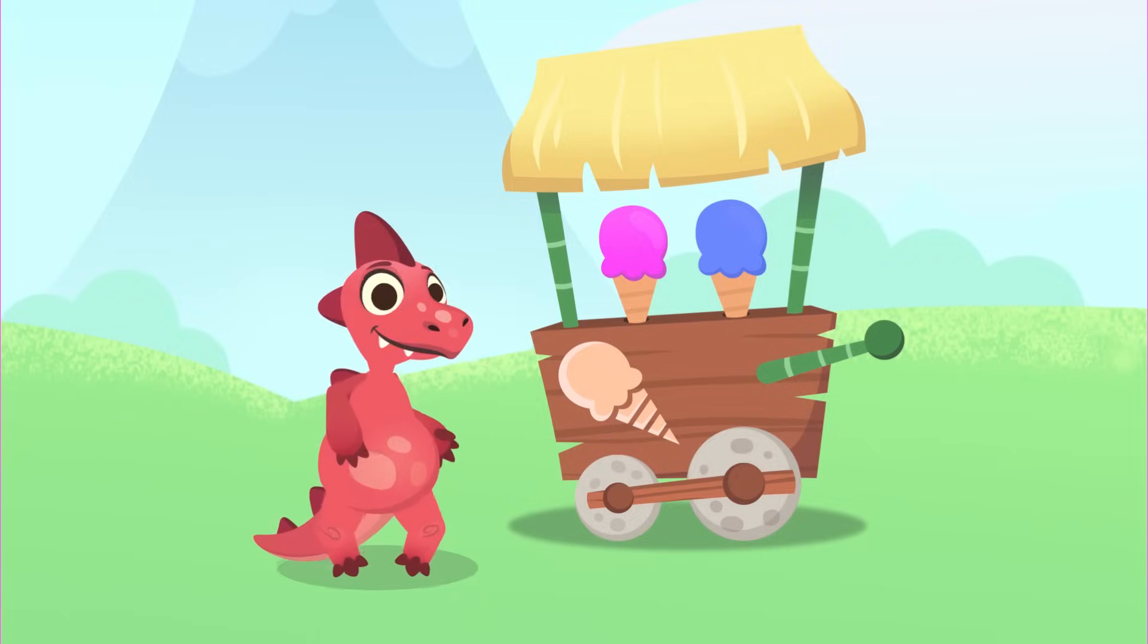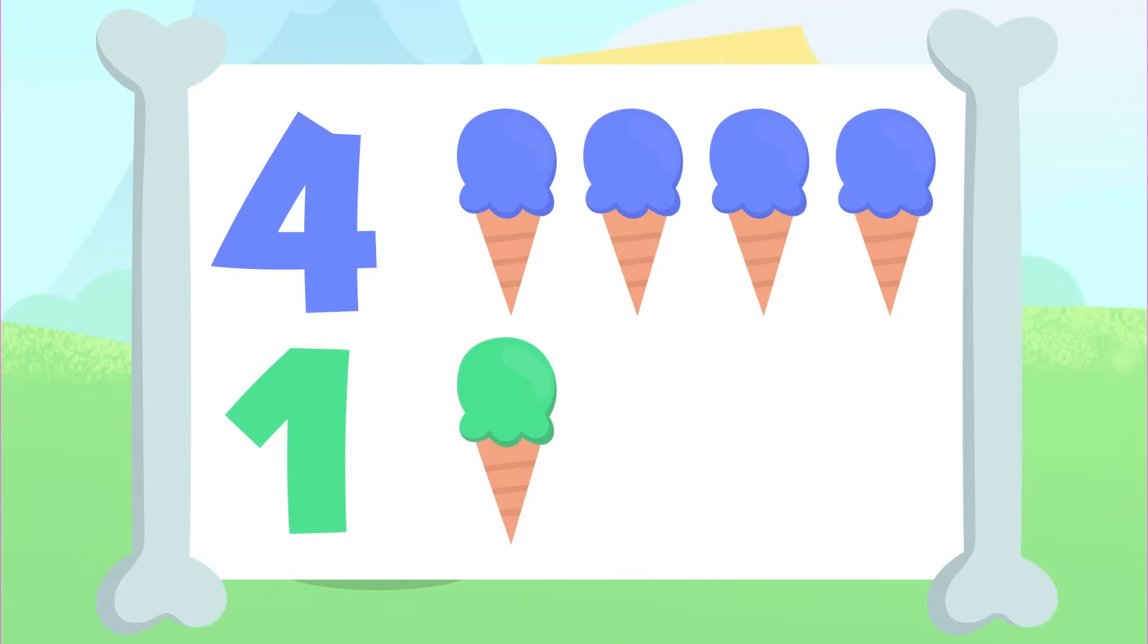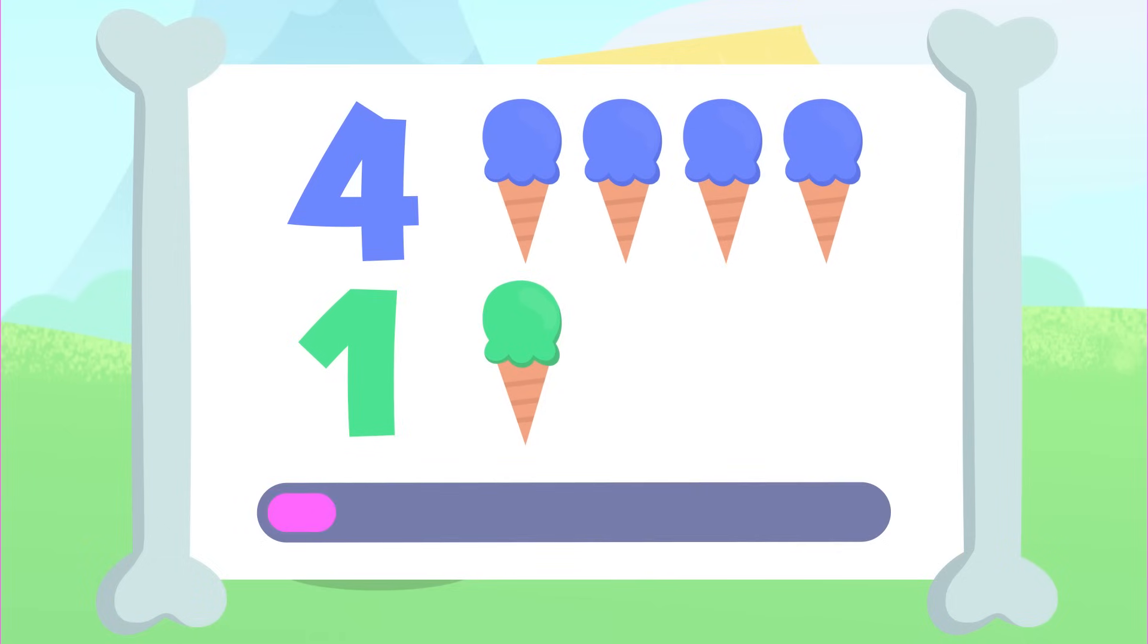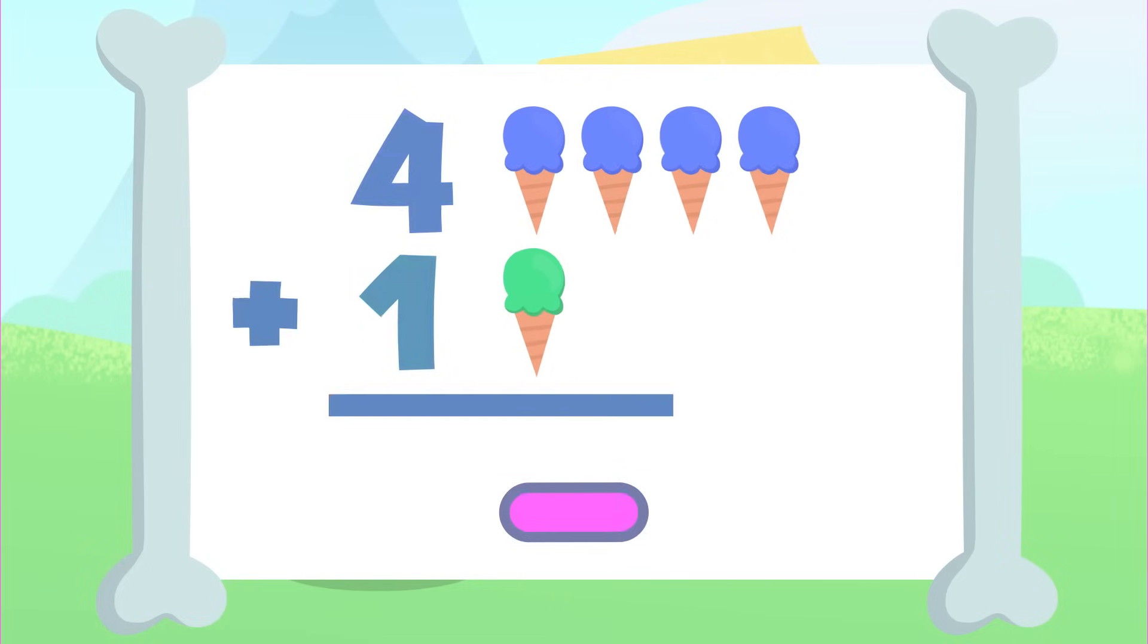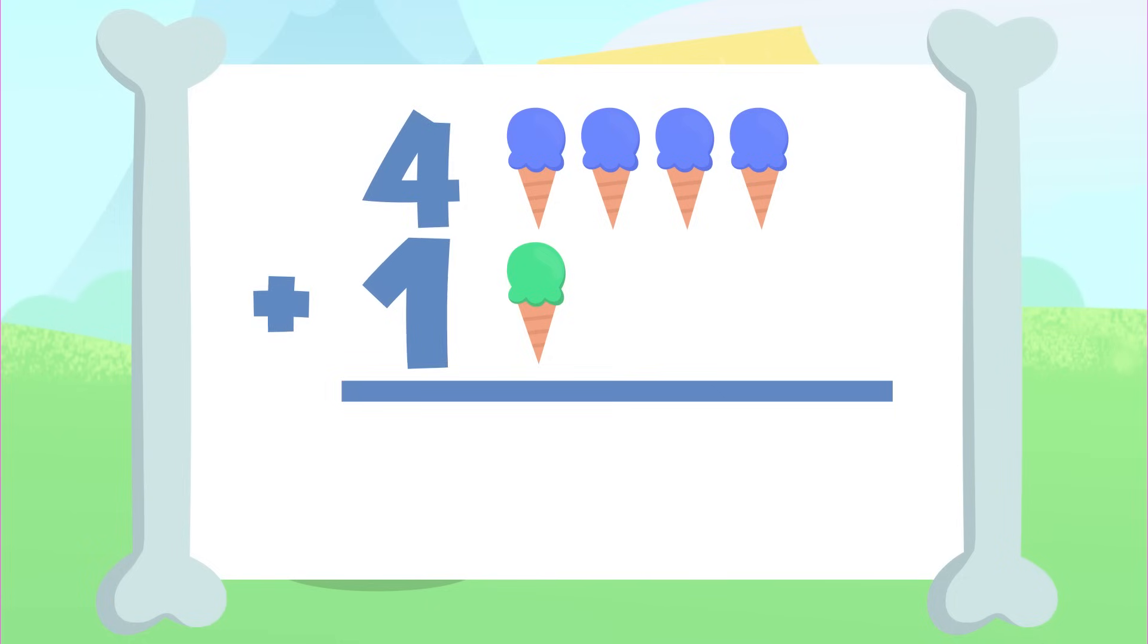Let's try another one. You'll have to add these four ice creams up here to the one ice cream down there. Let's go for it! You got it! The result of adding up four plus one is one, two, three, four, and five. Five! There are five ice creams.